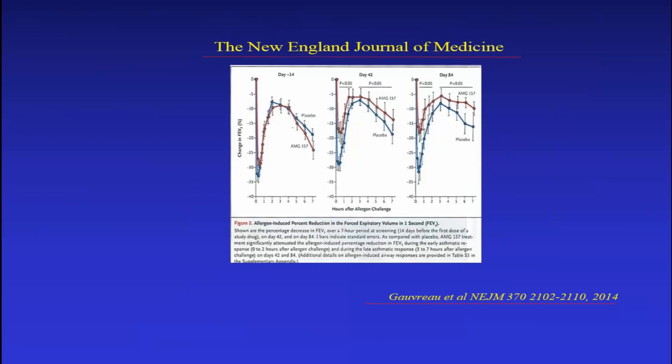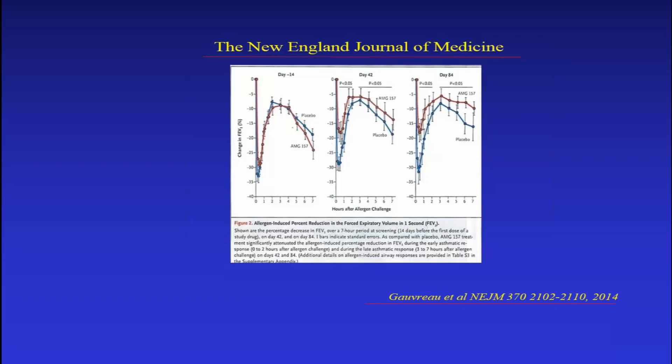The anti-TSLP data from Canada showing effect on the late-phase response was published in the New England Journal. Anti-TSLP remains a future potential target. IL-33 is a member of the IL-1 family. Research identified IL-1 — particularly IL-1 beta, molecularly cloned in the 1980s — as an important factor. IL-1 is a critical cofactor for T cells, TH2, and TH17 cells in both humans and mice, and clearly may have an important function as a critical cofactor for asthma.